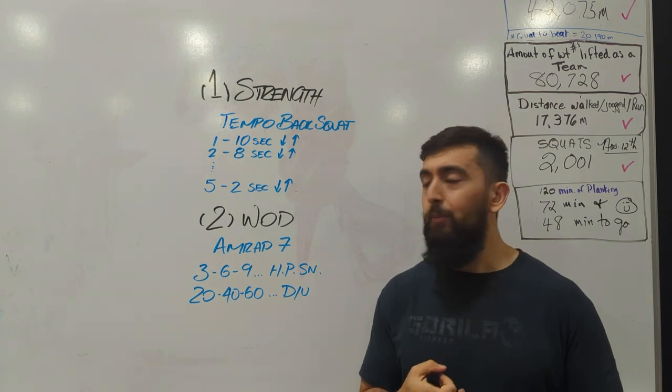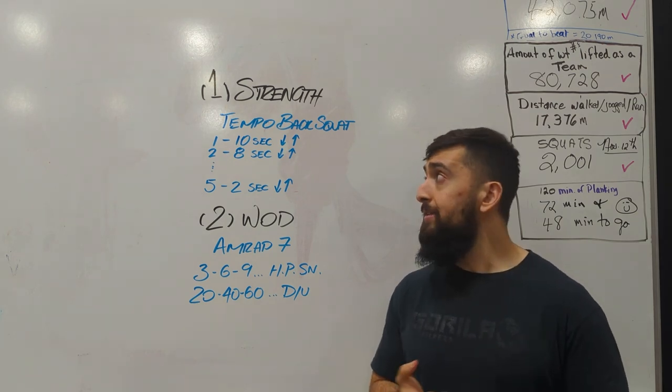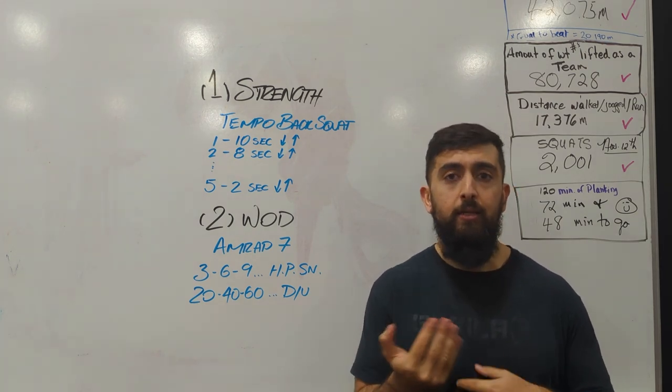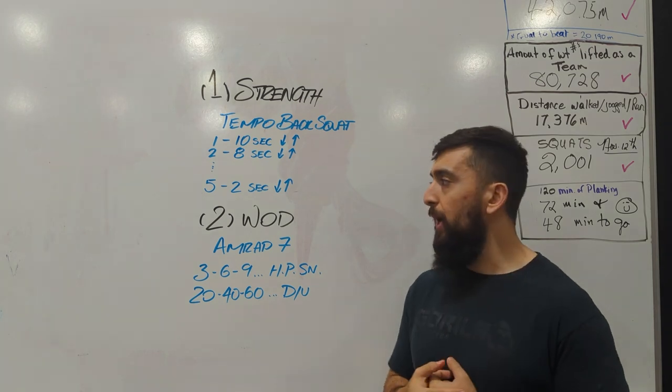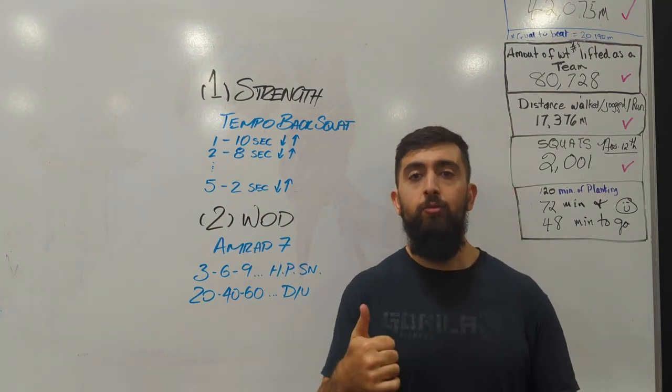On our first rep, we're going to go 10 seconds on the way down and 10 seconds up. Then we're going to do 8 seconds on the way down and 8 seconds up. And you're going to keep going through that pattern until you get to your 5th rep. We're going to do 2 seconds down and then 2 seconds up.